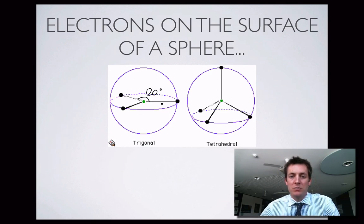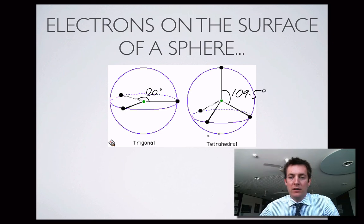If you had four electron pairs, here we've got one, two, three, four electron pairs on the surface of this sphere, they will not go 120 degrees apart, but 109.5 degrees apart, and this is called the tetrahedral bond angle.